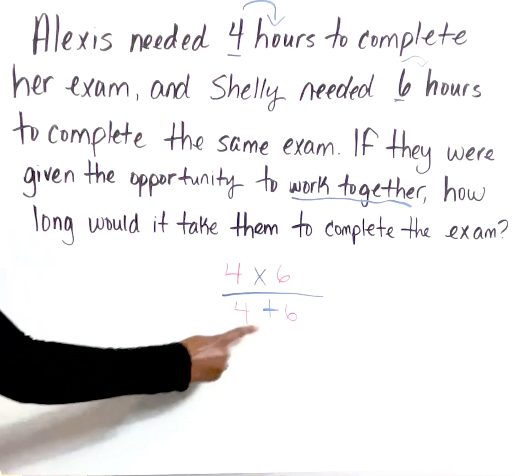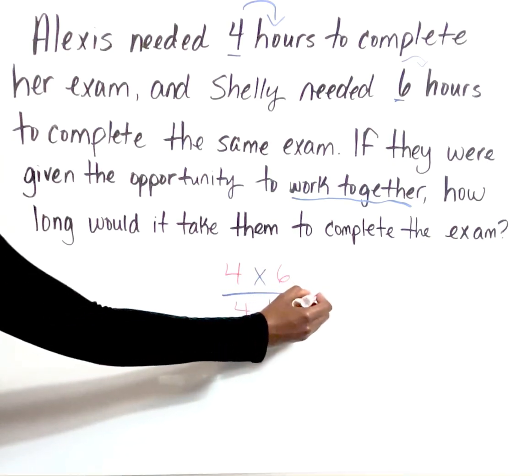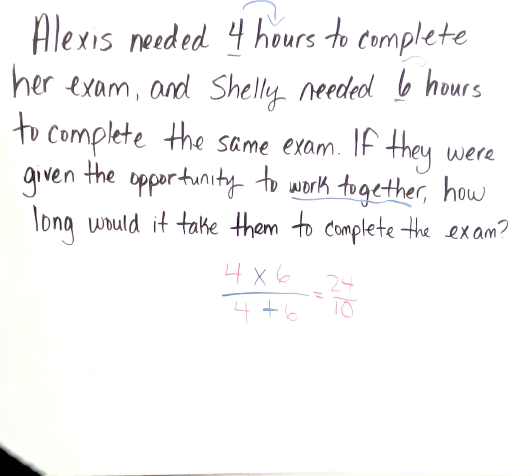Four times six gives us 24, and four plus six gives us 10. We don't want to leave it in that form - we always want to simplify it down. So 24 divided by 10...